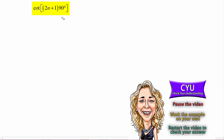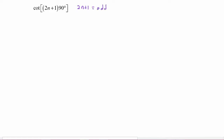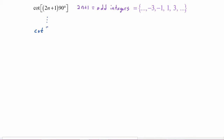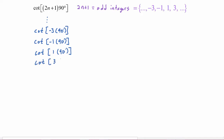Okay, let's see how you did. As we just saw, 2n plus 1 yields the odd integers. So if we plug in a few odd integers, we'd be evaluating the cotangent of negative 3 times 90 degrees, the cotangent of negative 1 times 90 degrees, the cotangent of positive 1 times 90 degrees, the cotangent of 3 times 90 degrees, and so on. Let's take a look at where these angles live.